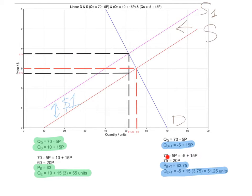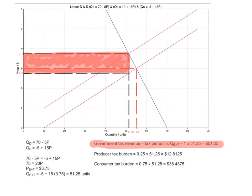This means that consumers bear 75 cents out of the one dollar tax and producers bear 25 cents, so the tax incidence falls more on the consumers. This is quite easy to predict because the demand curve appears much less elastic — or more inelastic — than the supply curve.